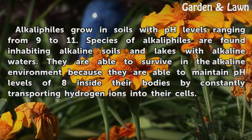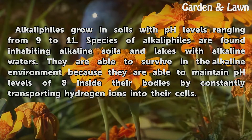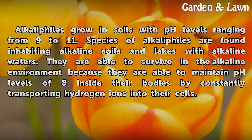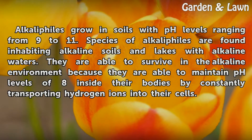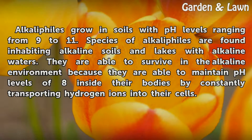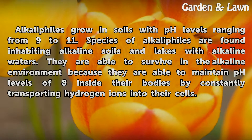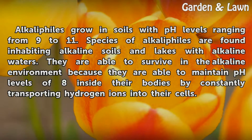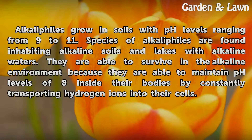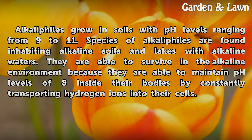Alkaliphiles grow in soils with pH levels ranging from 9 to 11. Species of alkaliphiles are found inhabiting alkaline soils and lakes with alkaline waters. They are able to survive in the alkaline environment because they are able to maintain pH levels of 8 inside their bodies by constantly transporting hydrogen ions into their cells.